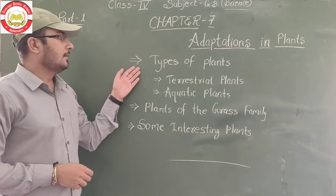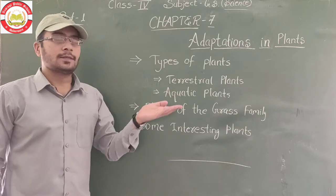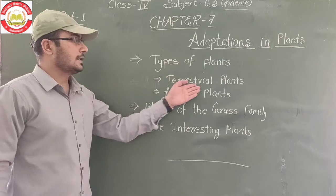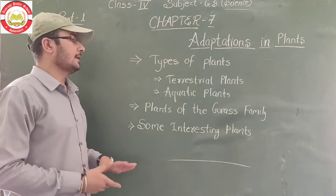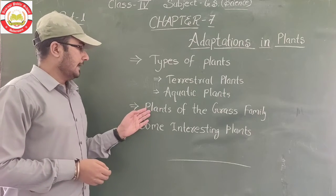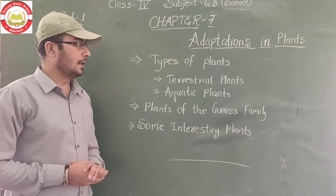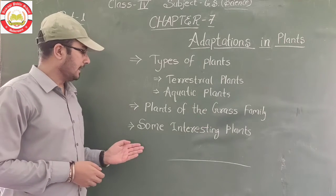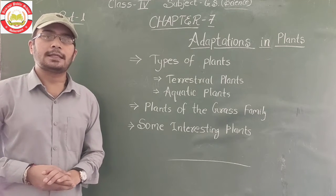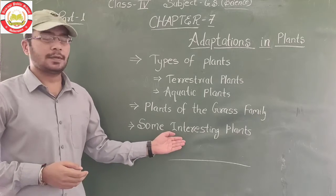So in this chapter, we learn about the types of plants — how many types of plants are growing in the whole world and on the earth. There are mainly two types of plants grown in the whole world: first is terrestrial plants, which grow on the land surface, and second is aquatic plants, which grow in water. We also learn about plants of the grass family and some interesting plants that do not produce their own food but eat some animals.